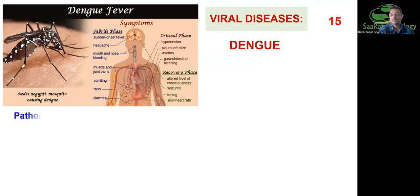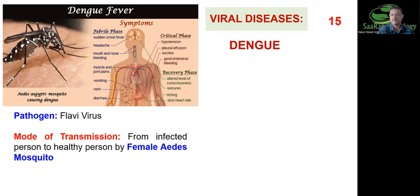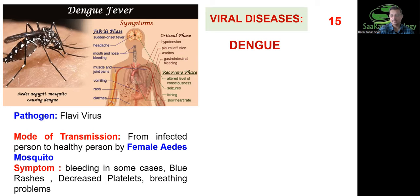Dengue is caused by flavivirus and is transmitted by the female Aedes aegypti mosquito. The infected mosquito bites a healthy person. Symptoms include sudden onset of fever, headache, bleeding from mouth and nose, muscle and joint pain, vomiting, and diarrhea. In severe cases, blood pressure drops, fluid accumulates in the lung region, and there can be gastrointestinal bleeding and blue rashes on the body — these are major symptoms of dengue fever.